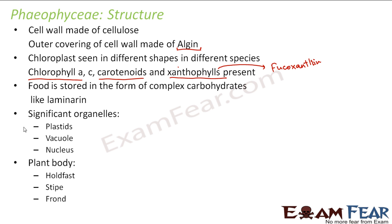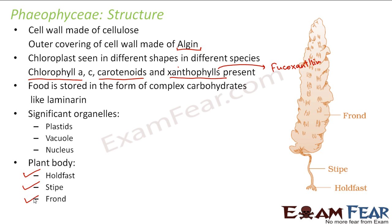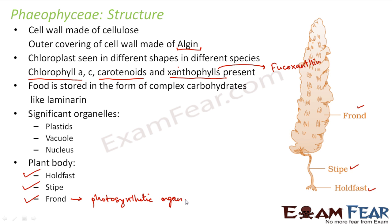Talking about the structure of the plant body, there are three important parts: the holdfast, stipe, and frond. The stipe is a stalk-like structure. The holdfast is the one which holds it to the substratum — it is not exactly a root but a substitute for a root, helping it hold to the base. The frond is the leaf-like structure and is the photosynthetic organ, consisting of chlorophyll.